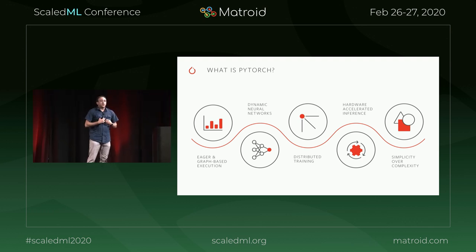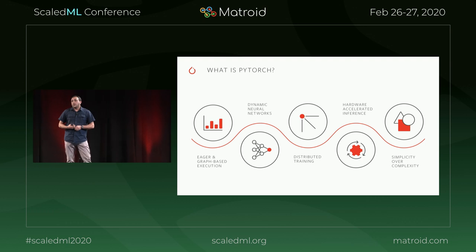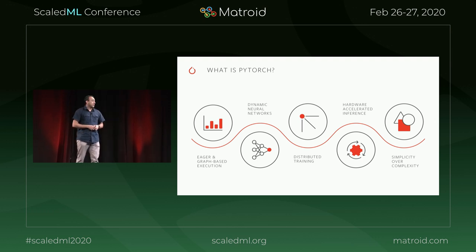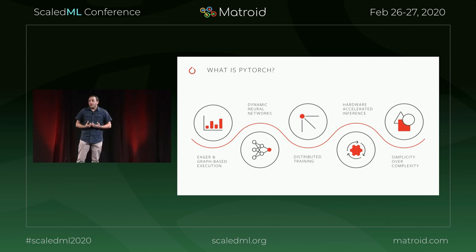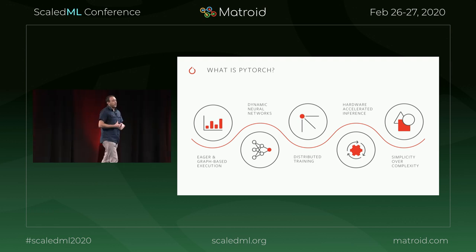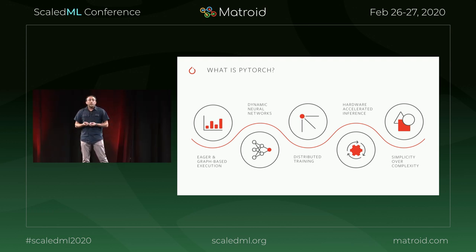PyTorch provides a few key features. One key feature is the eager mode of execution, which means you can write programs like Python programs, debug them easily — it's an imperative style of programming. But it also gives you the capabilities and power of speed, generating graphs that can be optimized for different hardware. It allows you to write dynamic neural networks with complex control flow, if conditions, and for loops. It also gives you a lot of distributed training building blocks, which is very important for PyTorch at Facebook scale.